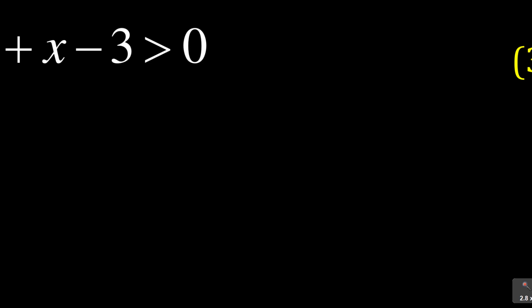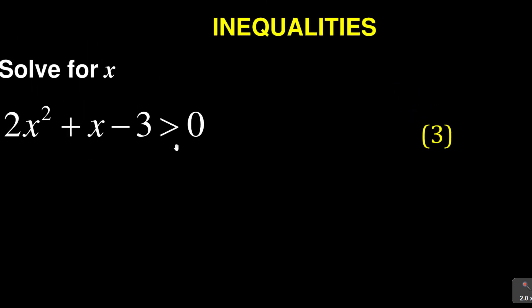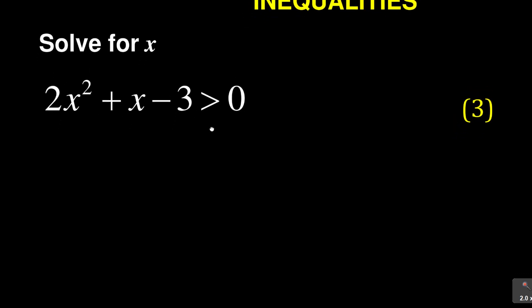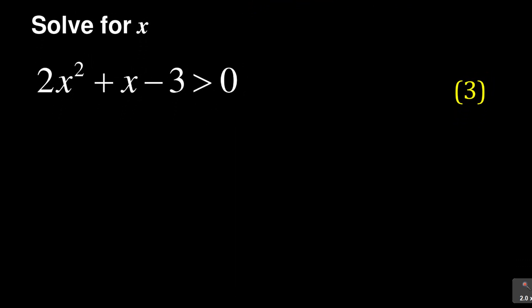Now I'm given here some inequalities and the question says I need to solve for x. There are many ways I can solve for x, but the quick one I always recommend is: whenever you're given a power of 2, the fallback method is to go through the quadratic equation. So when I see a square, I go through the quadratic equation, meaning I need to come up with my two answers.